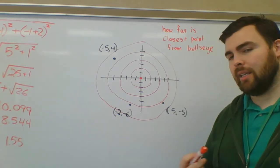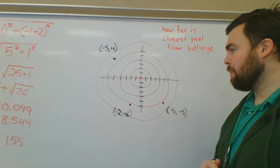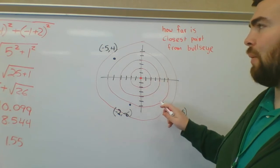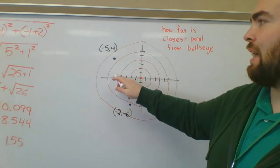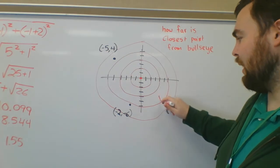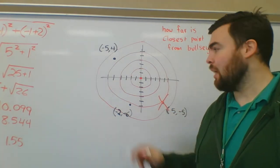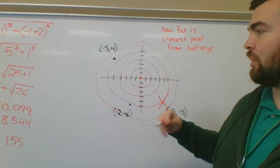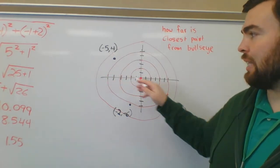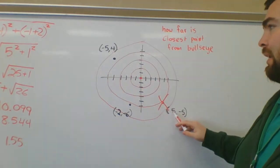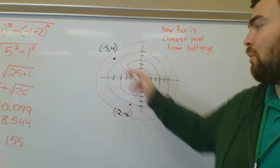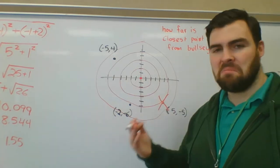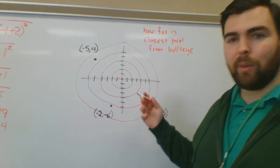You can use some common sense though. If one point is 5 away in x and another is only 4 away, you can start to narrow it down. If you have two points that are the same distance in x, look at the y values. But if there's nothing obviously in common, just run the distance formula for all of them.